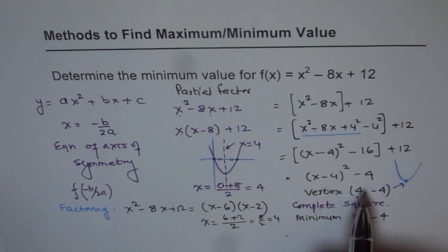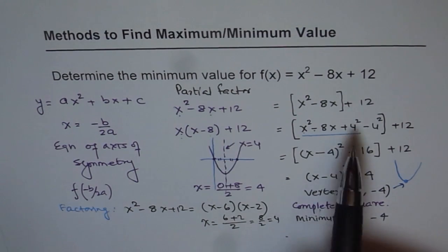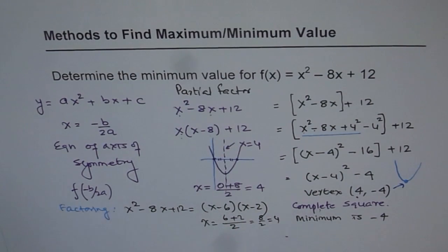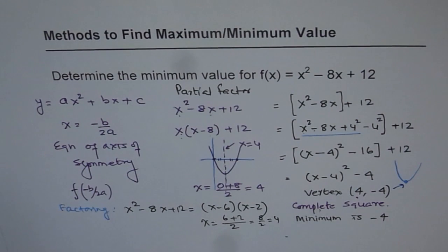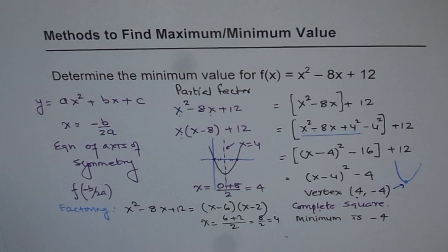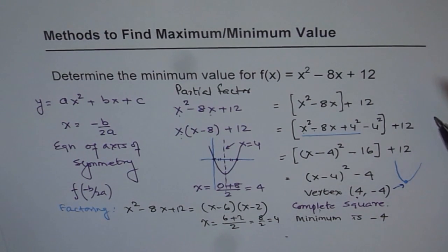We have covered four methods. The four methods you could use are: completing the squares, partial factoring, the formula x equals minus b over 2a, and factoring. All these methods help you find the minimum value — or the value at which the function will have a minimum — in cases where a, the leading coefficient, is positive.